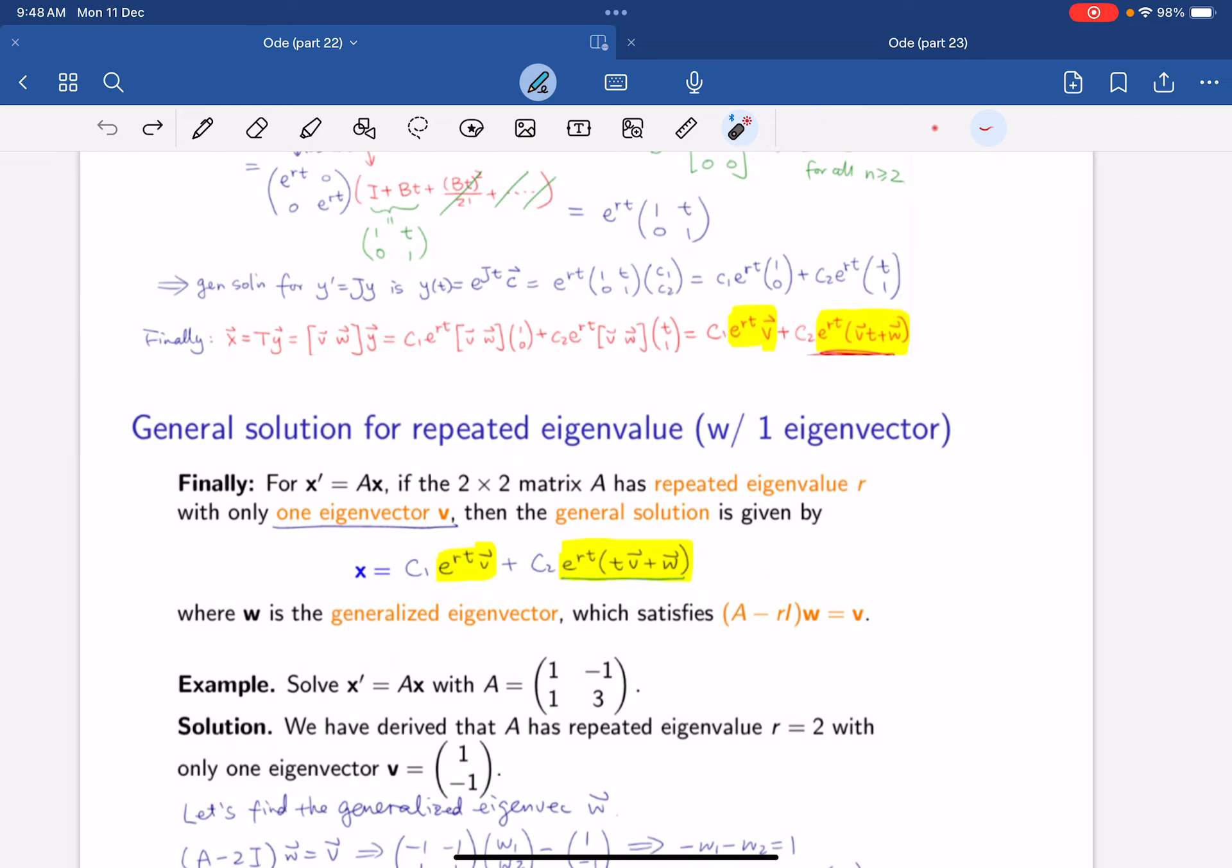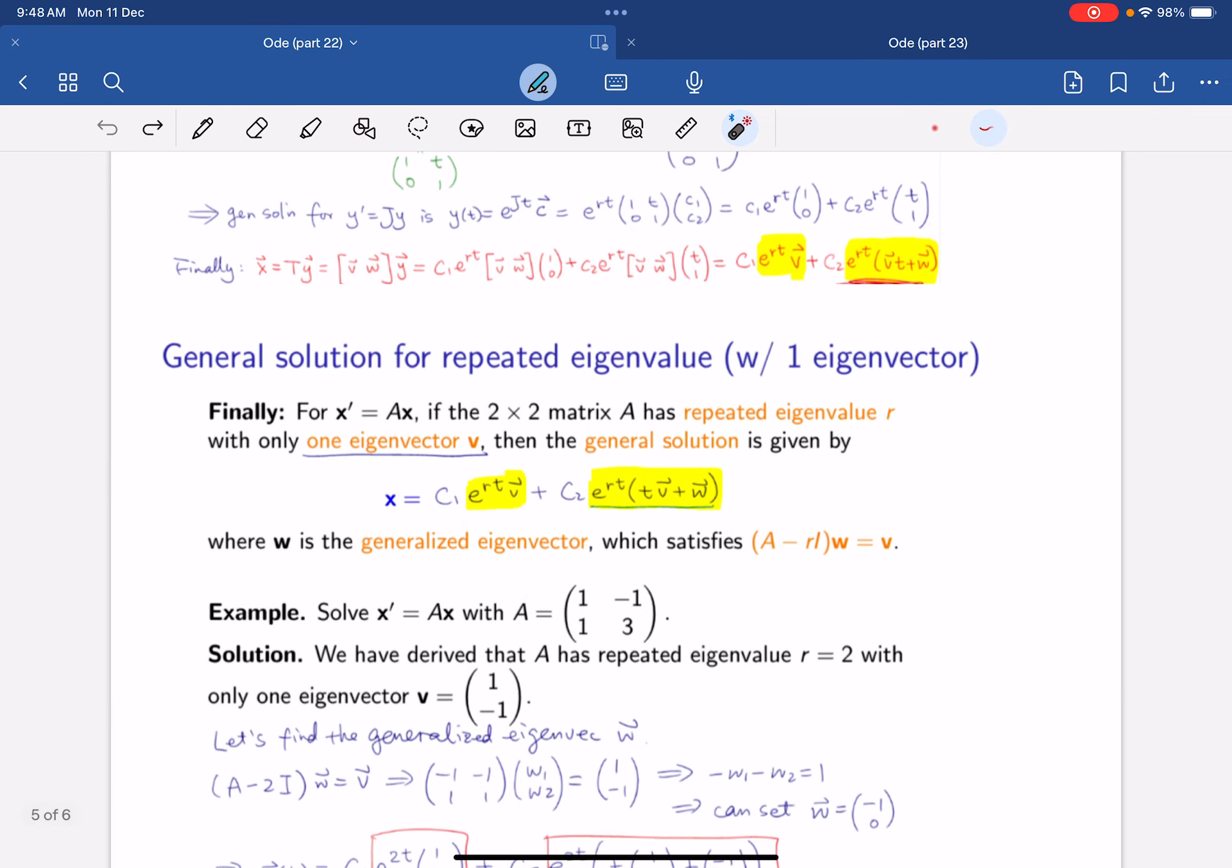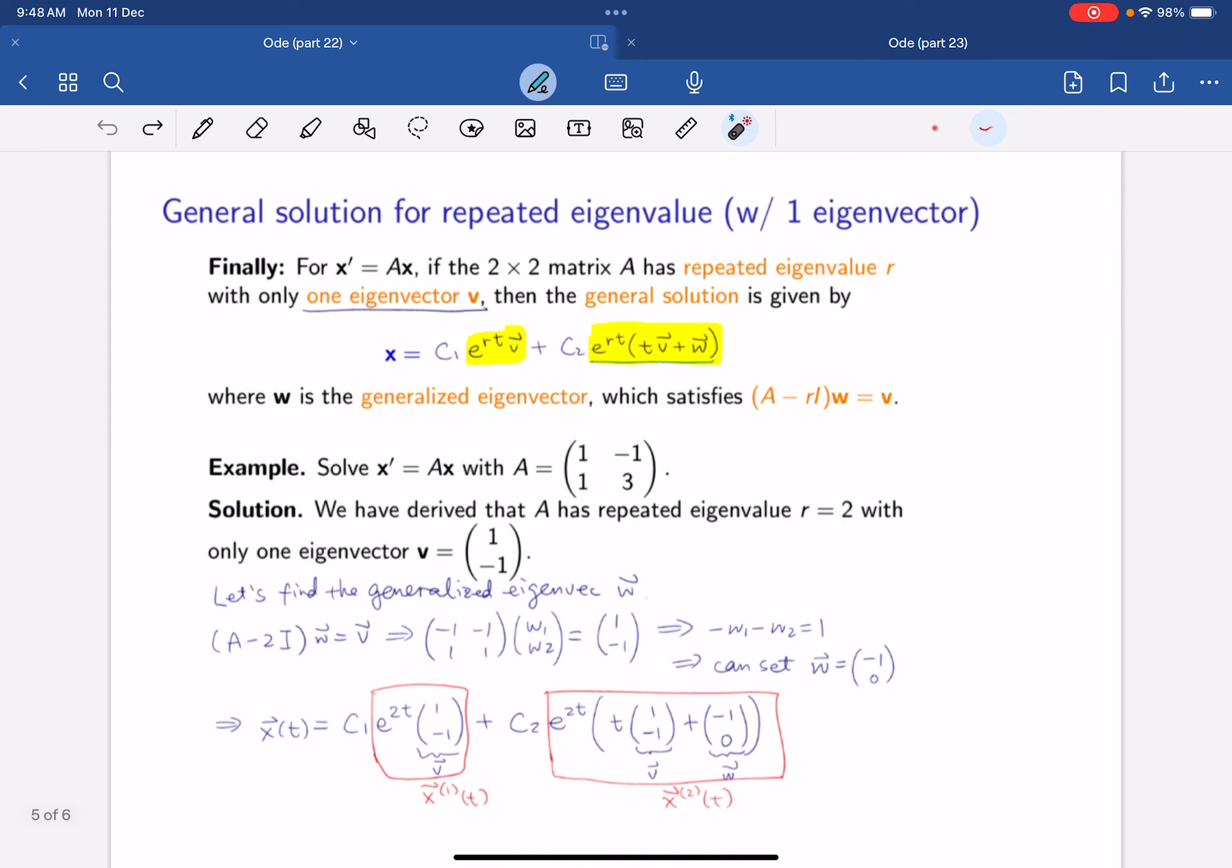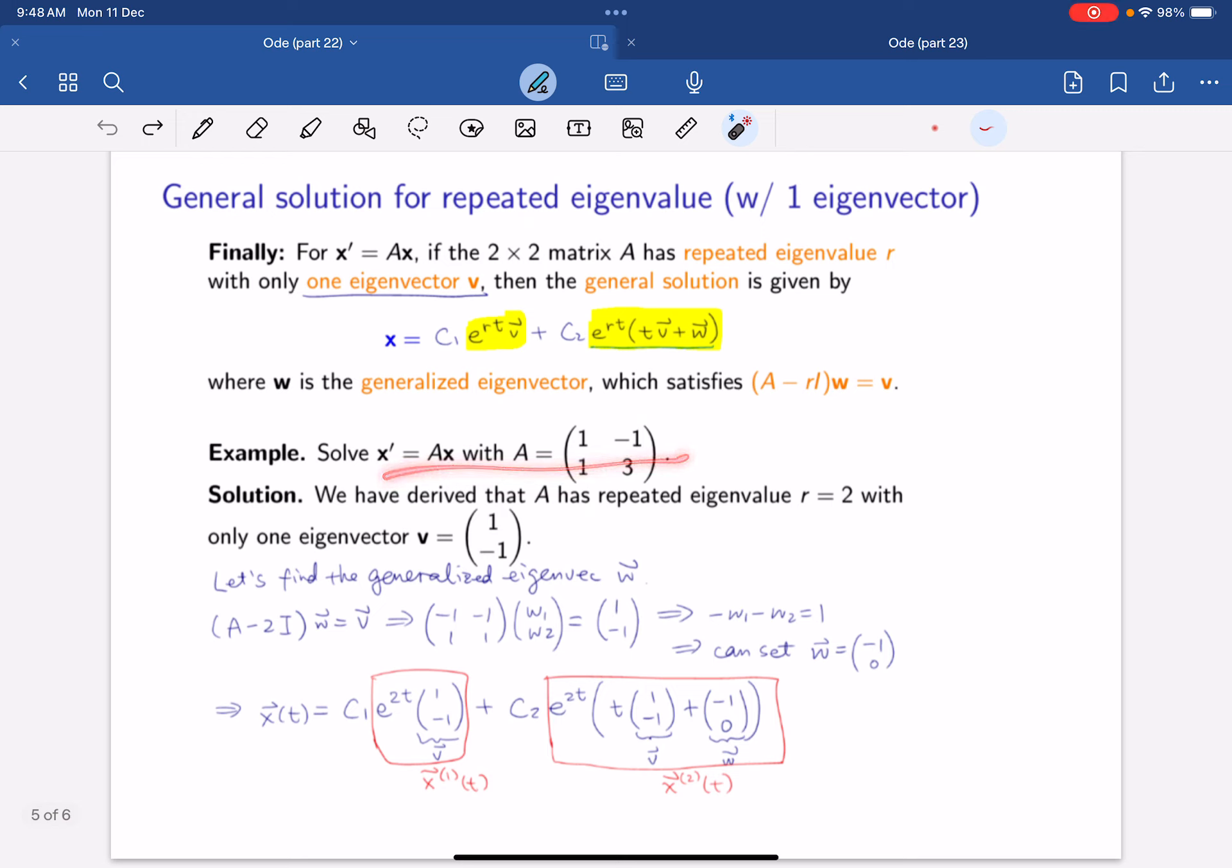So in that case, now we can say that the general solution for your repeated eigenvalue is the following. And so we just take an example like this, and we solve for the eigenvalue is 2, and the eigenvector is 1 minus 1. Then we find the W, which is minus 1, 0. Remember, they just solve for this. And then with that, you just sub it into the equation, and you get the following result.